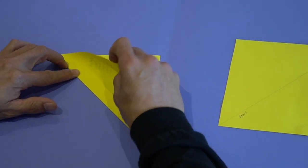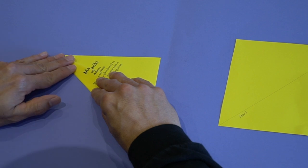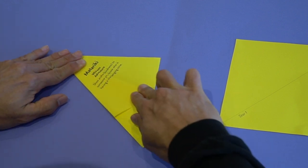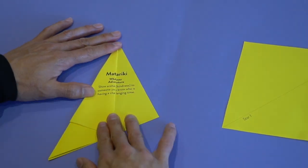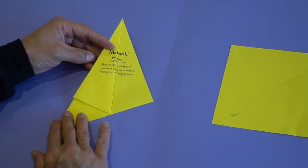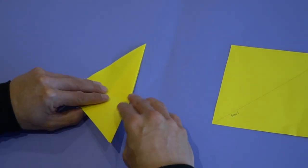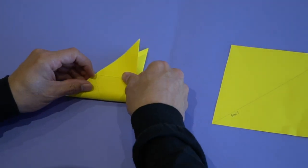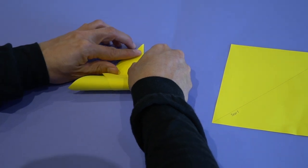Take one corner and fold it along the side edge, and try to line up the star name and the whānau adventure together. Turn it over, take that bottom edge and fold it up to the top.